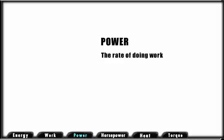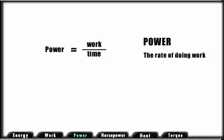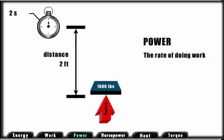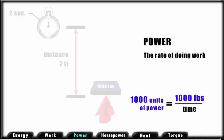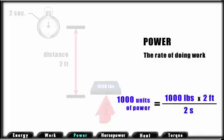Power may be defined as the rate of doing work or work over time in seconds. If we lift 1,000 pounds 2 feet in 2 seconds, we have accomplished 1,000 units of power or 1,000 times 2 divided by 2 seconds.